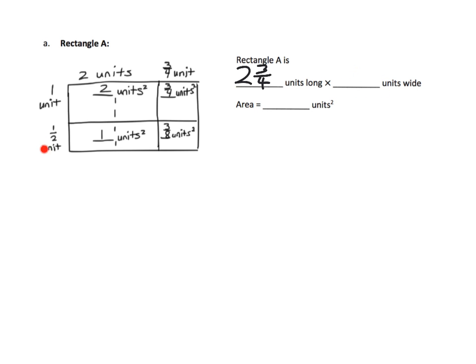We have one and a half units wide. The first thing is we could get the answer simply by adding all of these partial products — the areas of these four rectangles that we created. This rectangle is two, this one is one, so it's two plus one, then this rectangle is three-fourths, so plus three-fourths, and then we have plus three-eighths.